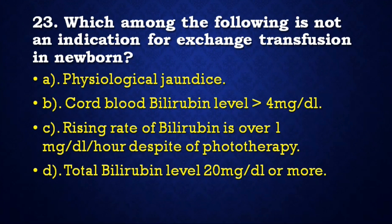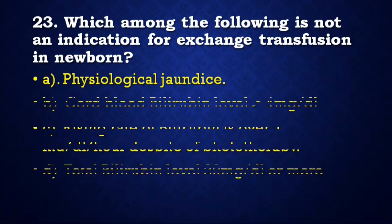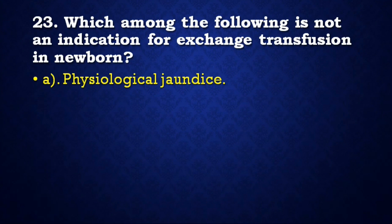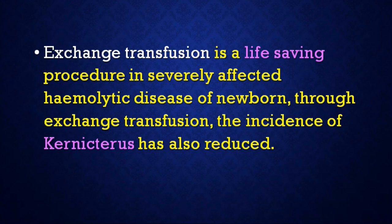Next question: Which among the following is NOT an indication for exchange transfusion in a newborn — physiological jaundice, cord blood bilirubin level more than 4 mg/dL, rising rate of bilirubin over 1 mg/dL per hour despite phototherapy, or total bilirubin level 20 mg/dL or more? Correct answer is physiological jaundice. Exchange transfusion is a life-saving procedure in severely affected hemolytic disease of the newborn, and through it the incidence of kernicterus has also reduced.